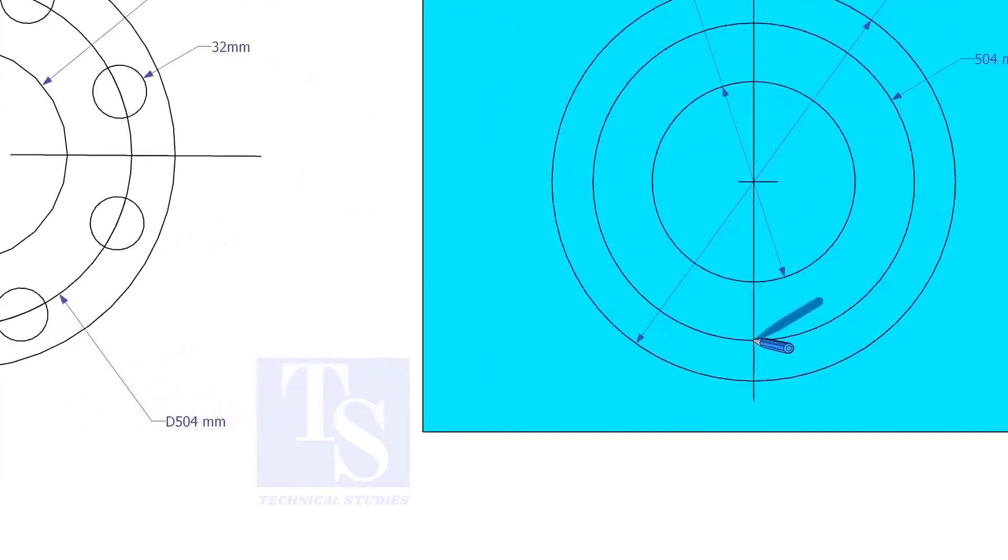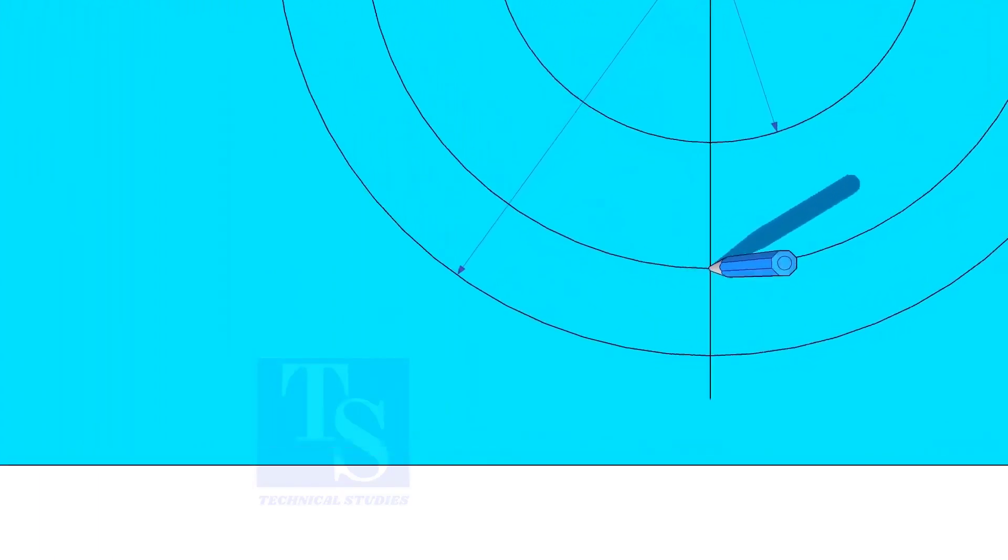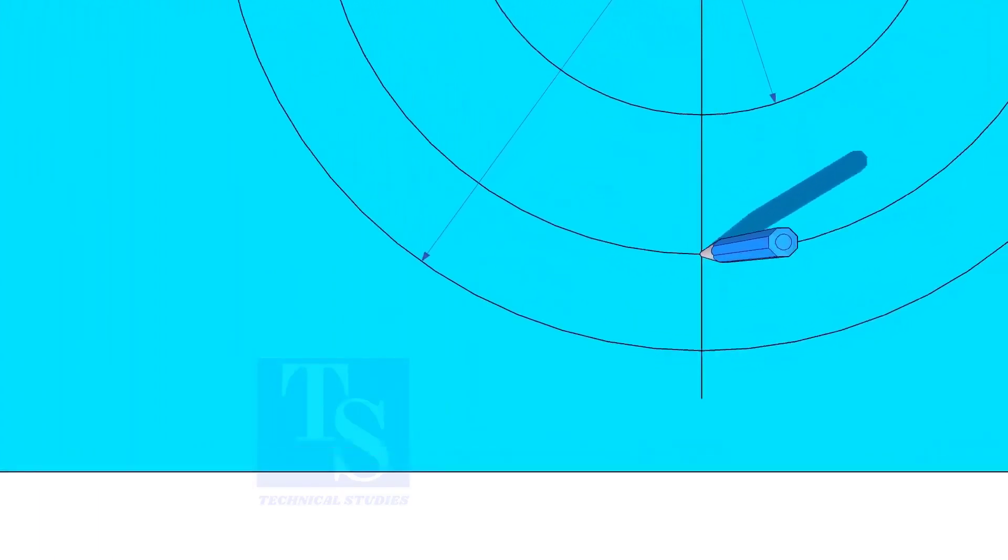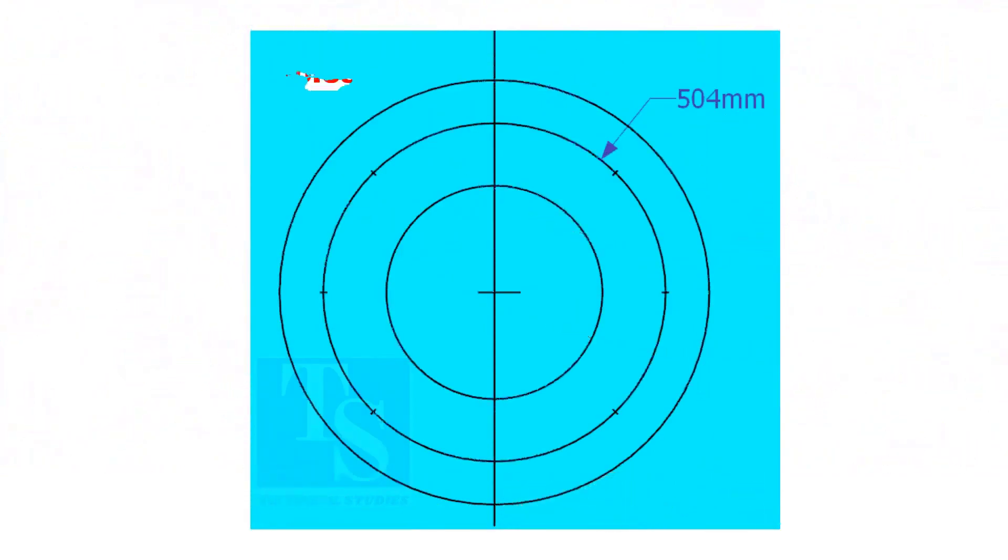Punch mark where the PCD circle cuts the center line. Since the number of holes is 8, divide the PCD into 8 equal parts.